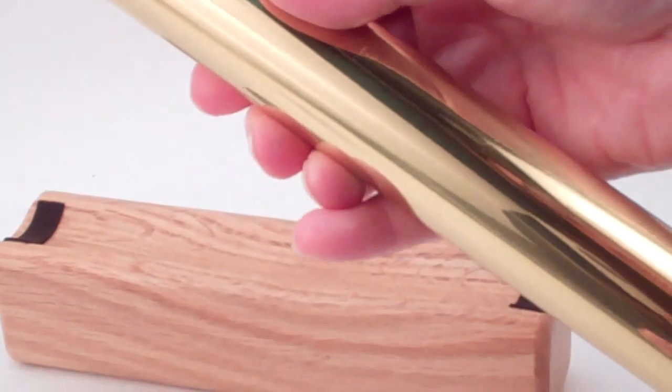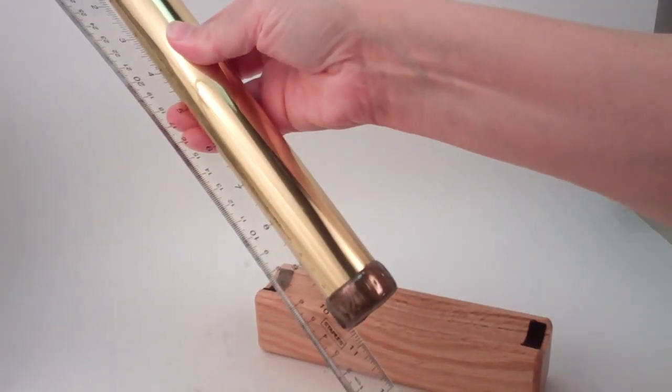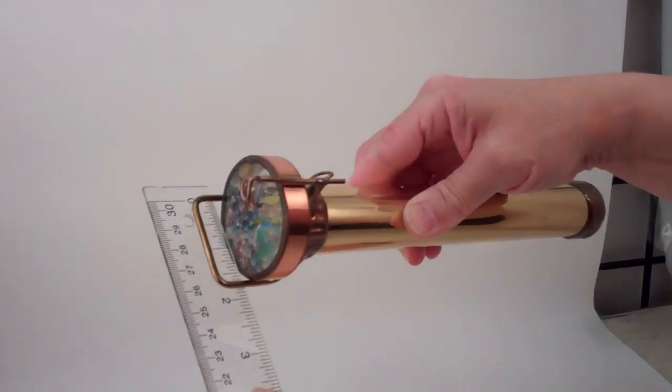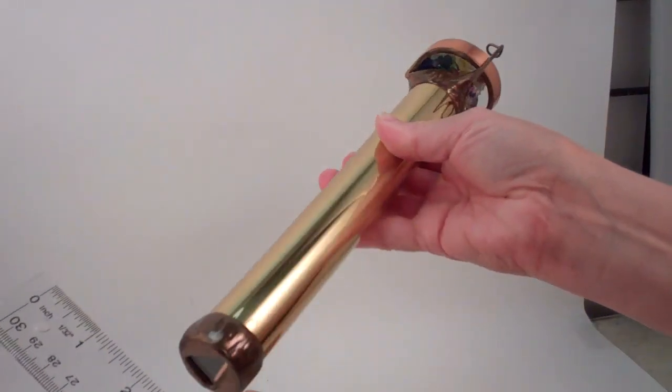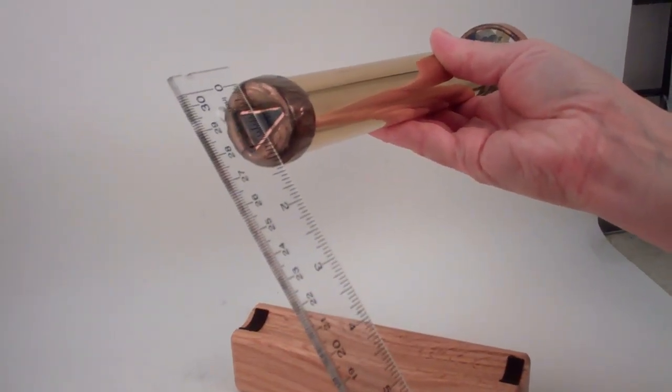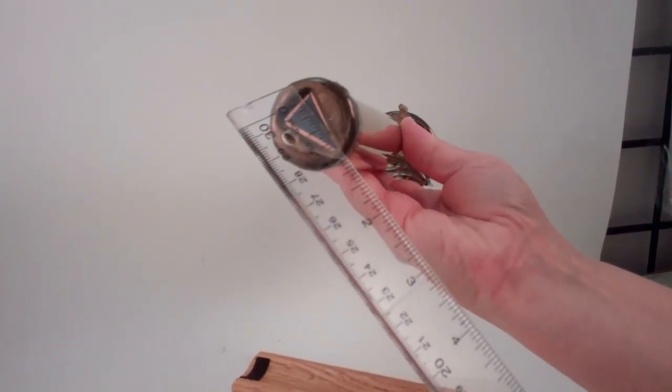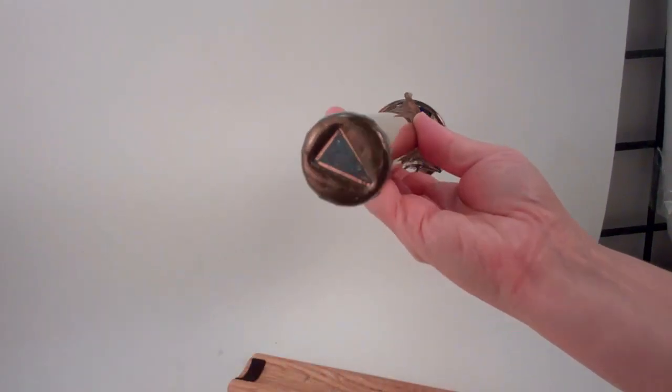Now allow me to show you the dimensions on this kaleidoscope. The overall length of the entire kaleidoscope is just over ten and a half inches. It has a width at the cage of just under two inches, and a diameter at the eyepiece at one and three quarter inches. And then the opening to the mirror system itself is approximately three quarters of an inch.